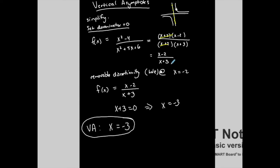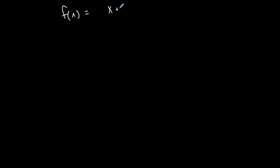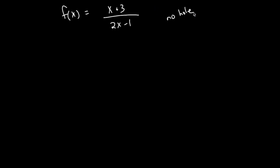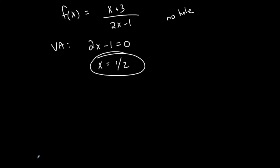The hole exists at x equals negative 2, which is a point. Let's do another example. Let's say I have x plus 3 over x minus 2. This is a rational function — a fraction with polynomials on top and bottom. I can't simplify it because it won't factor, so there's no removable discontinuity and no hole. It's already simplified. But it does have a vertical asymptote because I can set the denominator equal to 0 and get a value. My vertical asymptote is at the line x equals 2, and the graph will never touch or cross that line.